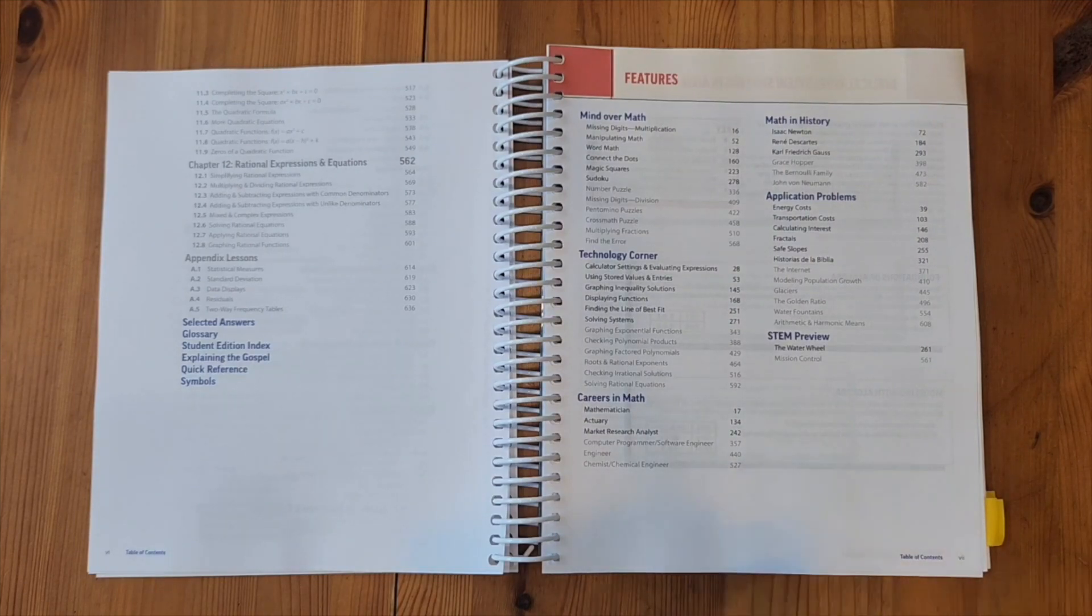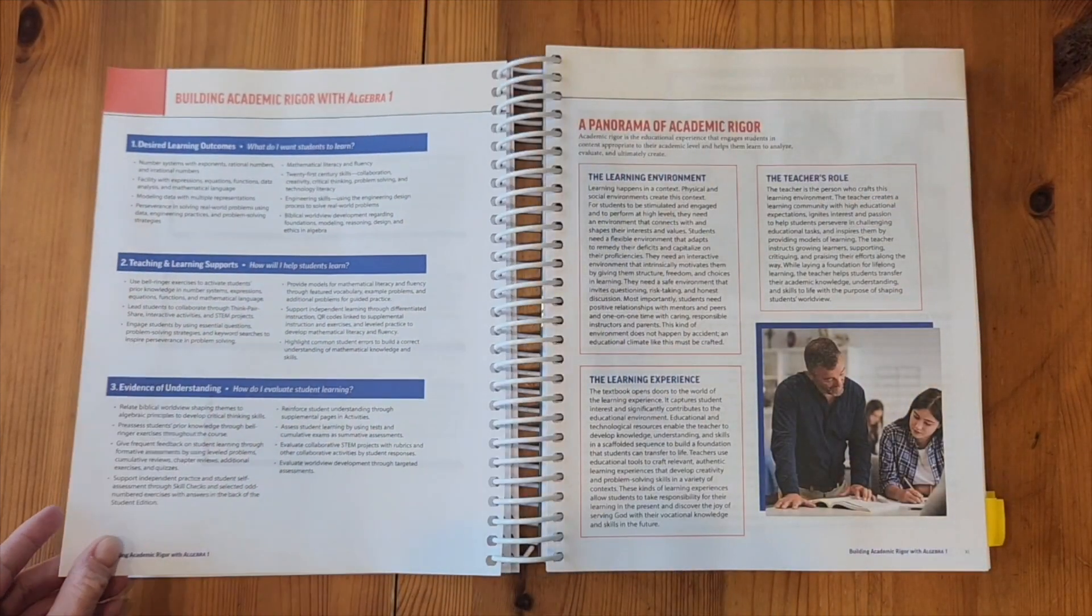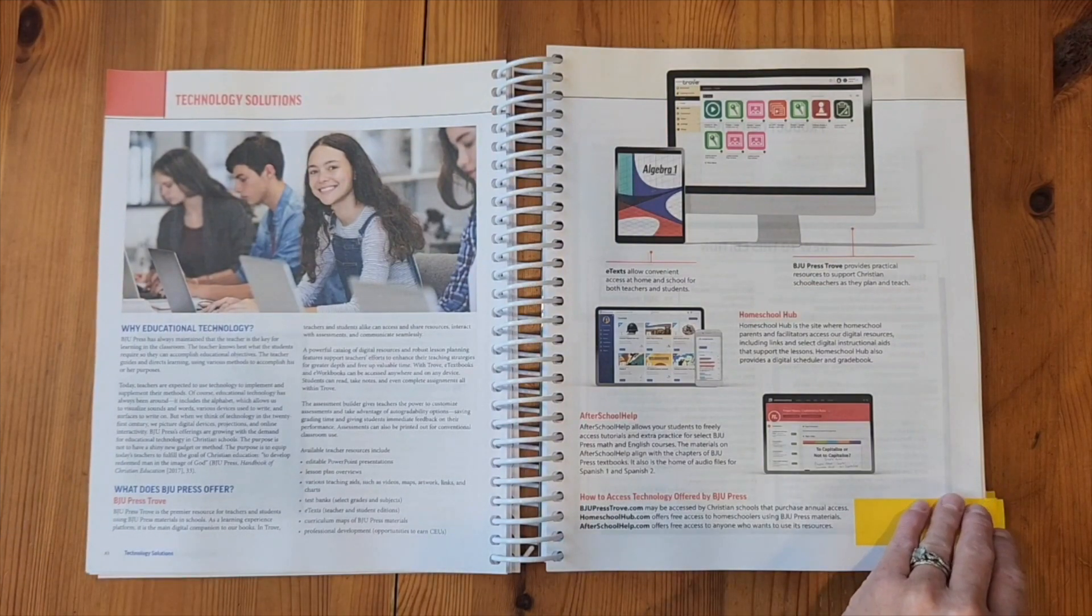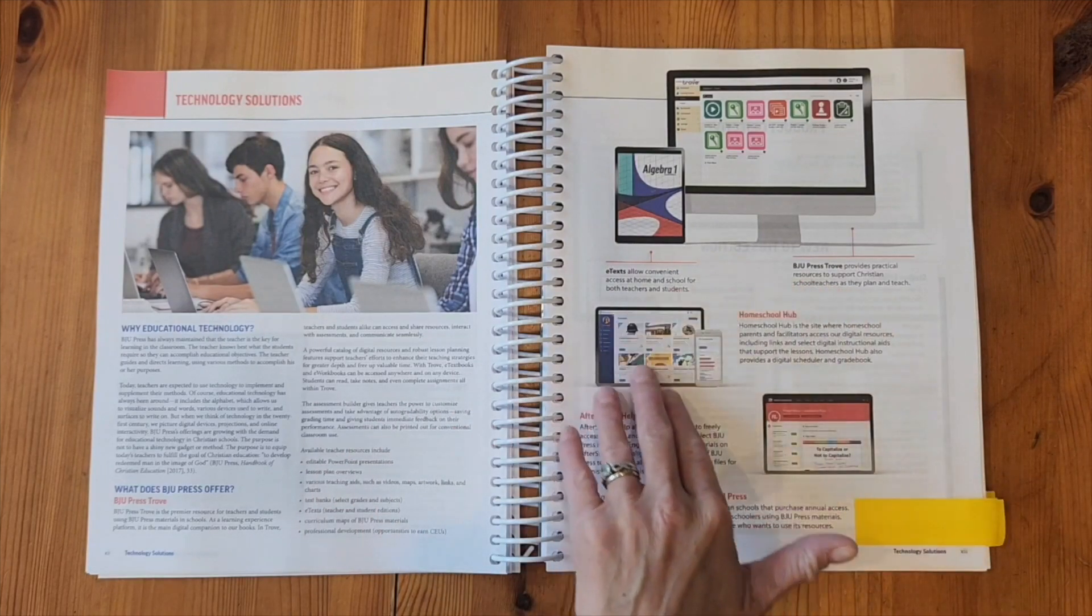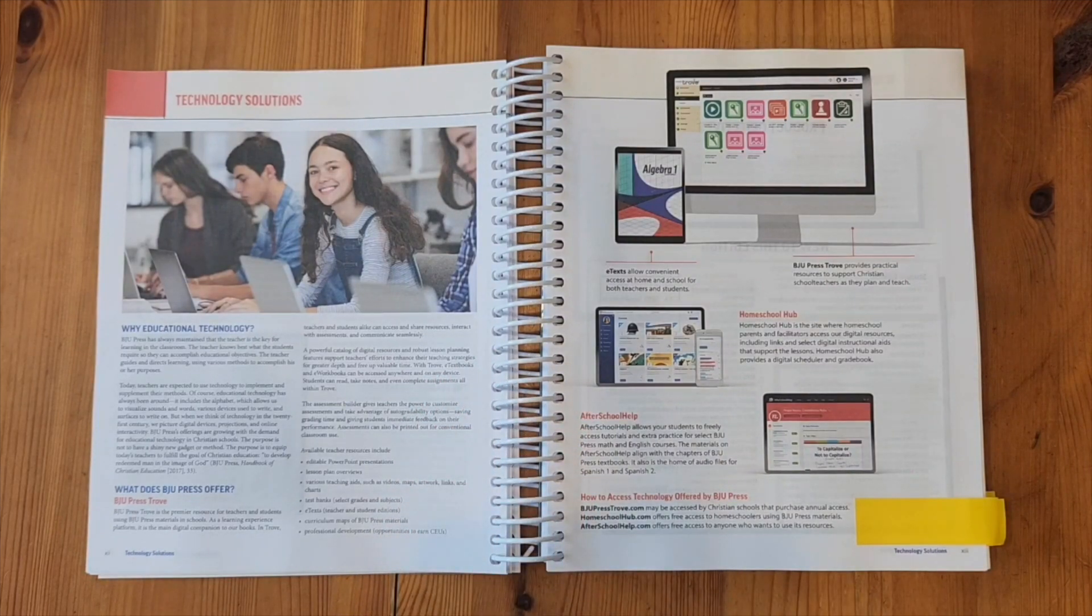We also have a table of contents for all of the features in this new edition about mind over math, technology corner, careers in math, math and history, application problems, and STEM previews. Then we have some information on biblical worldview shaping, how to build academic rigor with Algebra 1, and technology solutions. I do want to point out on this page we have some information about the homeschool hub and also about afterschoolhelp.com, which is the website where you can go to get extra practice or access some basic tutorials for some lessons.